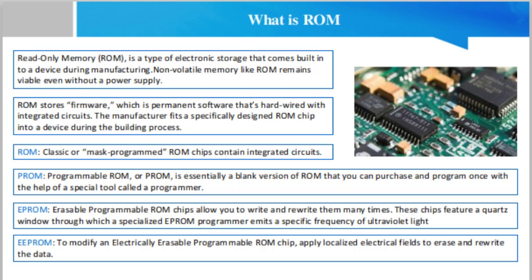EPROM, or erasable programmable ROM chips, allow you to write and rewrite them many times. These chips feature a quartz window through which a specialized EPROM programmer emits a specific frequency of ultraviolet light. This light burns out all the tiny charges in the EPROM to reopen its circuits, effectively rendering the chip blank again.